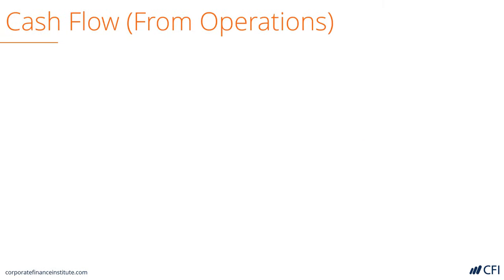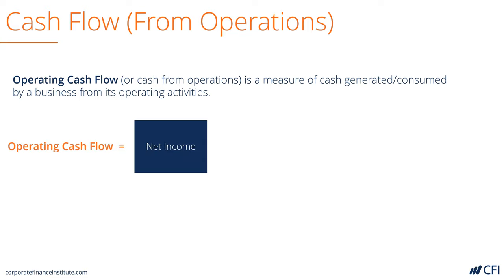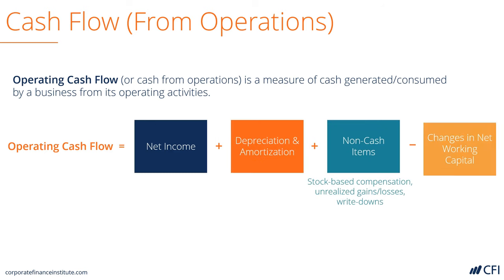Now let's look at cash flow, or cash from operations, sometimes called operating cash flow. It's an actual measure of the cash that's generated or consumed in a business from its regular operating activities. It can be found on the cash flow statement. It's calculated by taking net income and adding back depreciation and amortization.